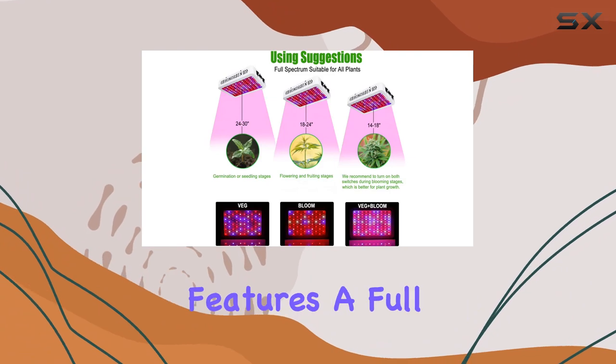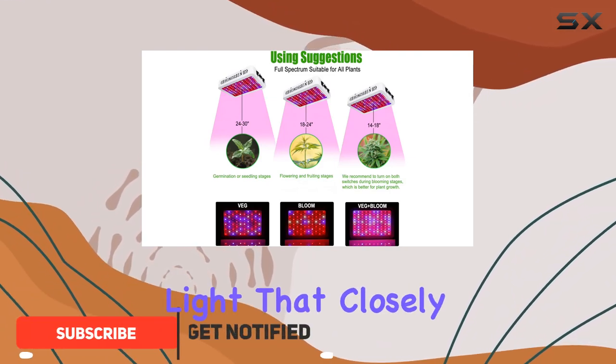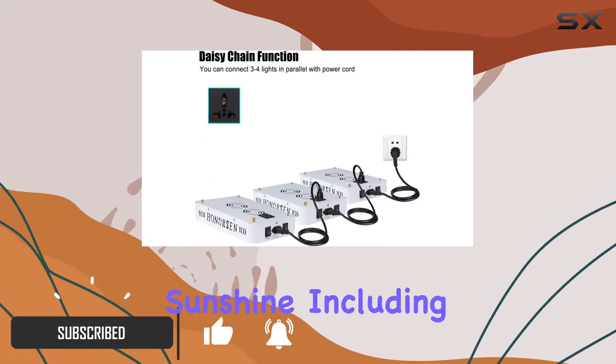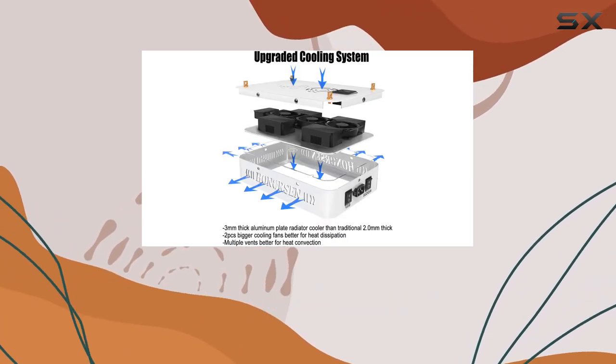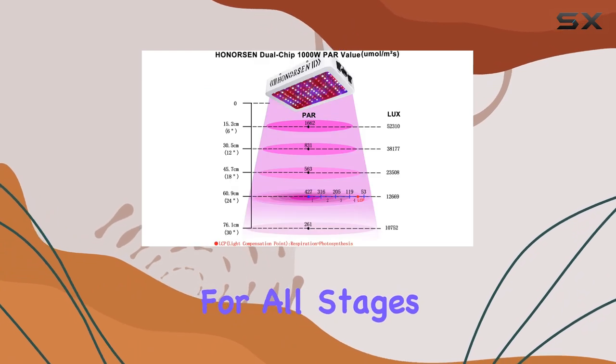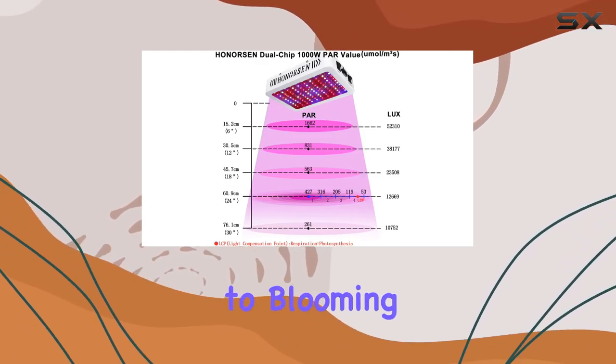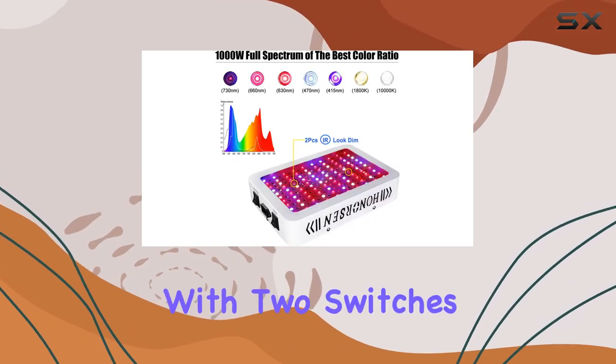This grow light features a full spectrum of light that closely mimics natural sunshine, including red, blue, white, and infrared LEDs. This diverse spectrum makes it suitable for all stages of plant growth, from seeding to blooming.